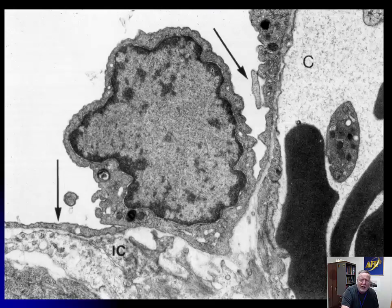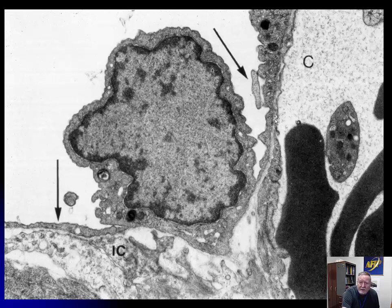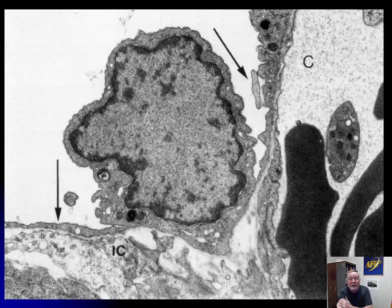At higher magnification of the type 1 pneumocyte, we can see the erythrocytes confirming we are in a capillary, and also a platelet — a little anucleate cellular material surrounded by a membrane with a number of granules. Here is the basement membrane of the capillary, and here are the processes of the type 1 pneumocyte, which are extremely thin. The nucleus is visible, but there are not a lot of organelles. These are serendipitous pictures but very important for seeing the thin processes of the type 1 pneumocyte in the normal lung.